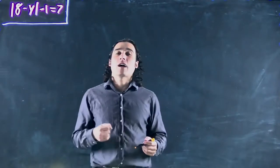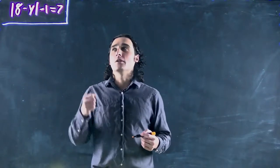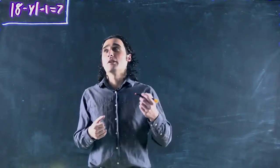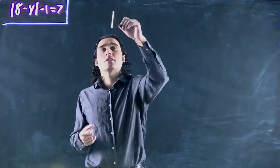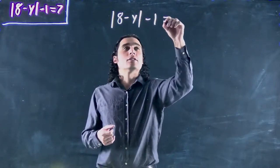Hi again. We've moved on to absolute values. We want to be able to actually evaluate an absolute value equation. So we've got to see how we do it. What do we got? We've got the absolute value of 8 minus y minus 1 equals 7.